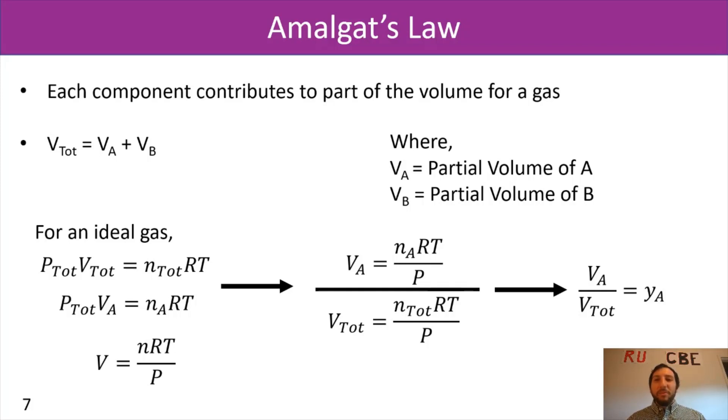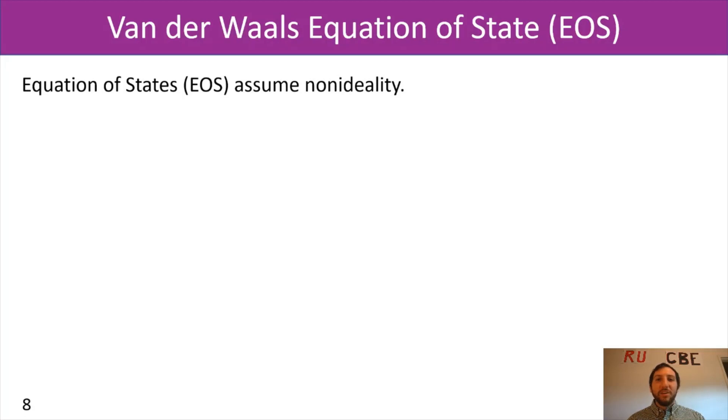We made a lot of assumptions when we use an ideal gas. But some of the times, you cannot assume an ideal gas. And that's where our equations of state are going to come into play. You have, for example, the Van der Waals equation of state, which, in this case, is going to assume non-ideality. In Van der Waals' equation of state, it's modifying our ideal gas law. In this case, Van der Waals' equation of state is going to be P equals RT divided by the specific volume minus B minus A over specific volume squared.